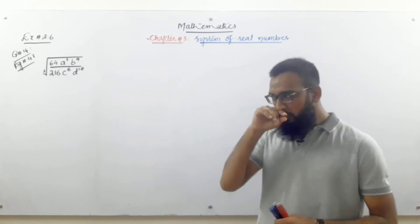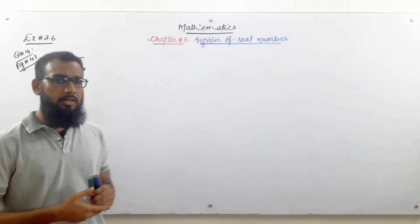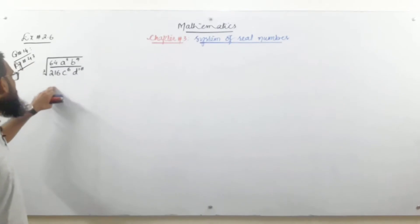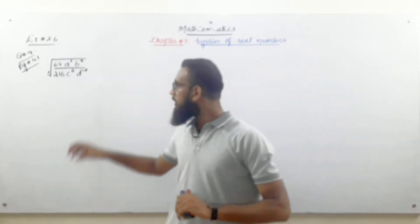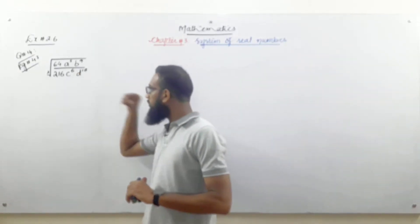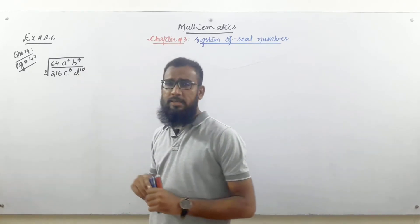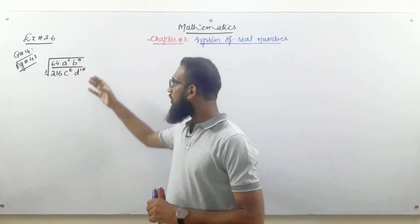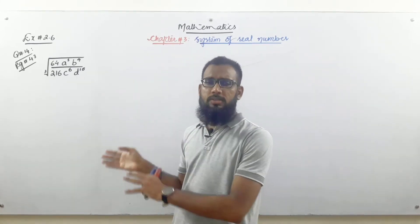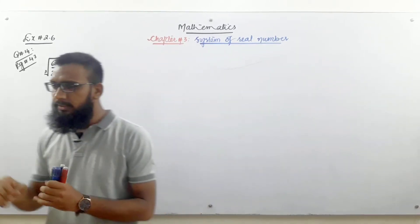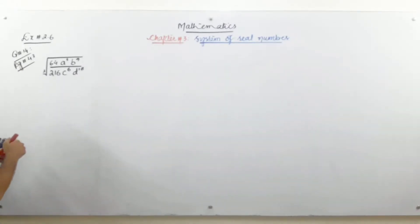So we have 2.6 question number 14 which we will do, and then we will continue. Question number 14 is: cube root of 64a³b⁹ divided by 216c⁶d¹⁸. That is 2.6 question number 14. Now, how do we solve it? First, repeat the question and then go to the solution.